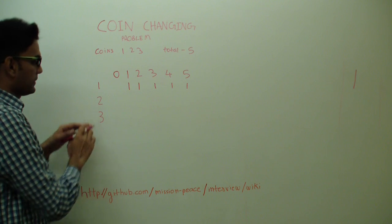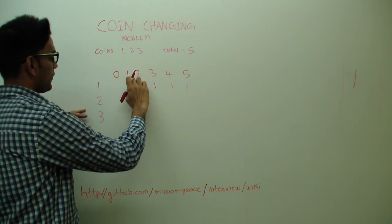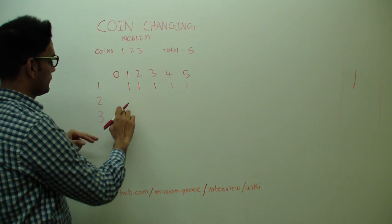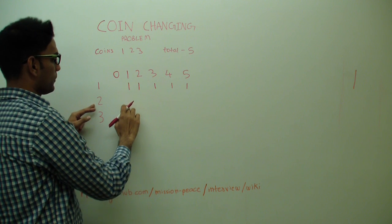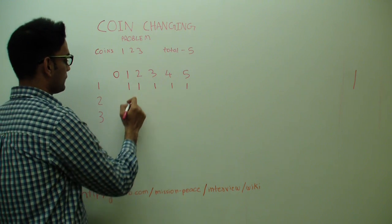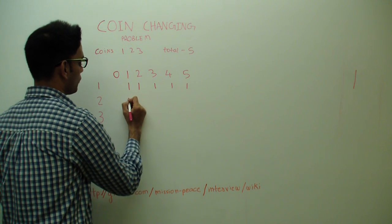Now let's introduce coin 2. If you have a total of 1 and coins 1 and 2, the coin 2 is not going to play any role because 2 is greater than 1. So we just get the value from the top, which is 1.